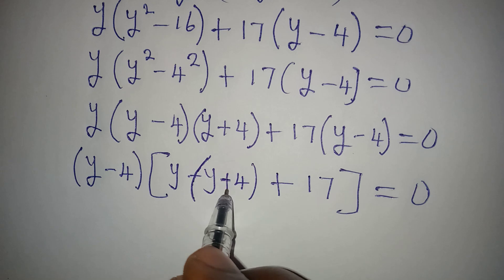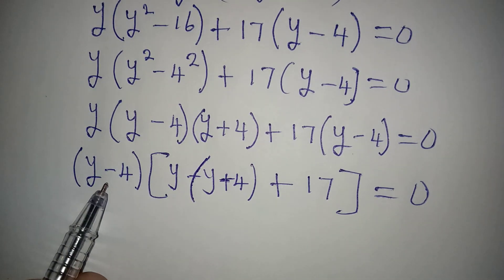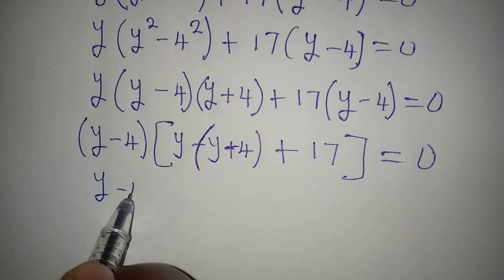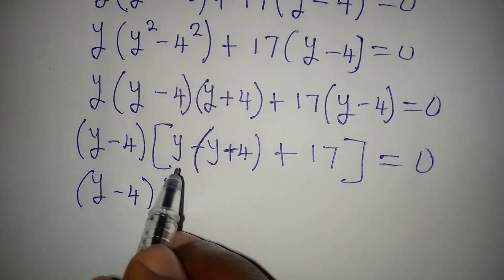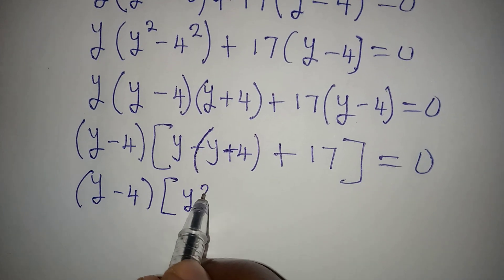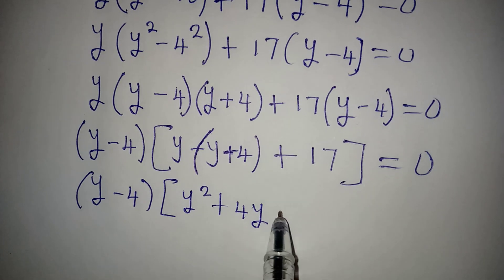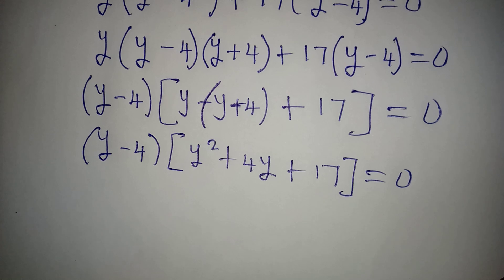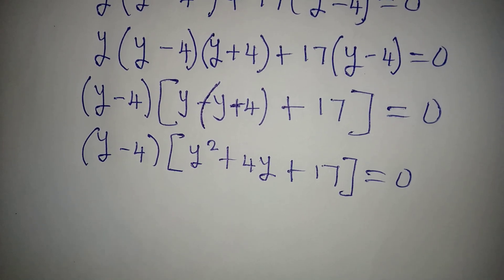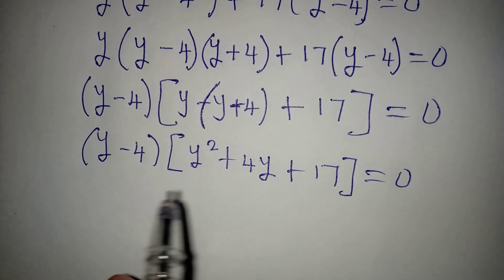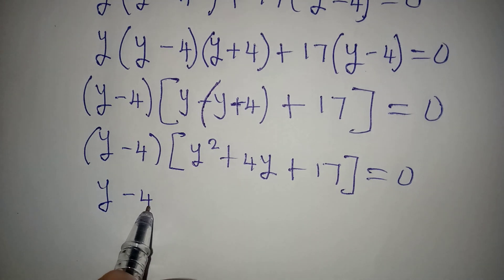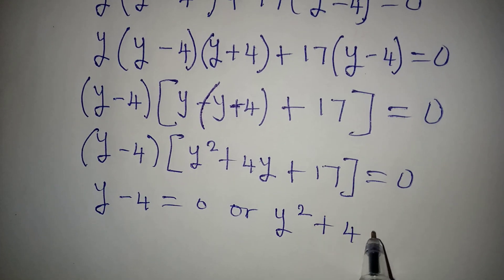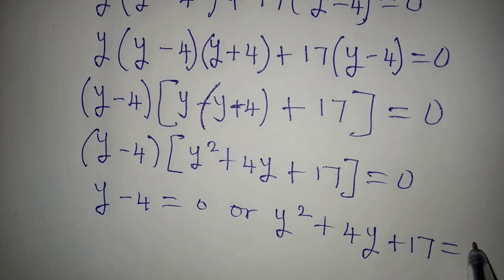After factoring out (y minus 4), what remains inside the second bracket is y times (y plus 4) plus 17, which expands to y squared plus 4y plus 17. So we have (y minus 4)(y squared plus 4y plus 17) equals 0. Applying the zero product rule, it is either y minus 4 equals 0, or y squared plus 4y plus 17 equals 0.